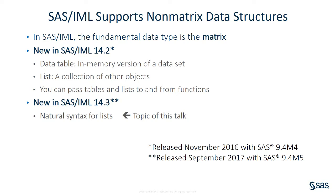Matrices are very useful structures, but SAS IML 14.2 introduced new data structures, namely tables and lists. These enable you to pass collections of objects to and from functions. A new feature in SAS IML 14.3 is the ability to define and manipulate lists by using a natural syntax in the language.